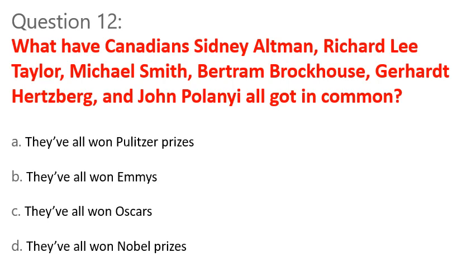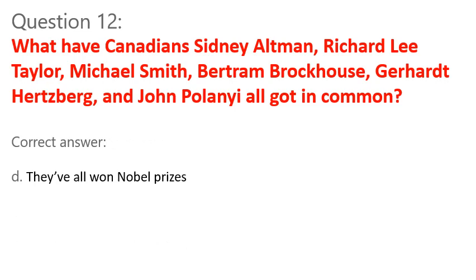Question 12. What have Canadian Sidney Altman, Richard Lee Taylor, Michael Smith, Bertram Brockhaus, Gerhard Hertzberg, and John Polanyi all got in common? A. They've all won Pulitzer Prizes. B. They've all won Emmys. C. They've all won Oscars. D. They've all won Nobel Prizes. Correct answer: D. They've all won Nobel Prizes.